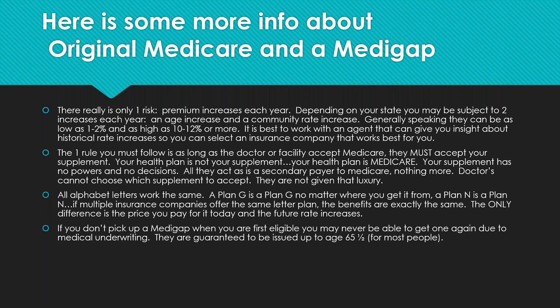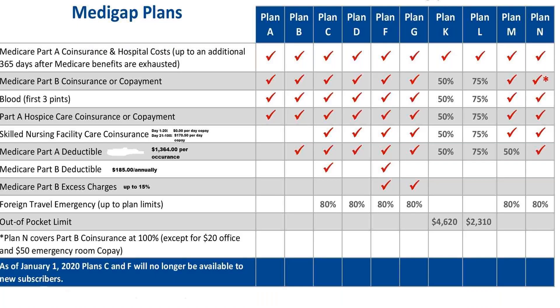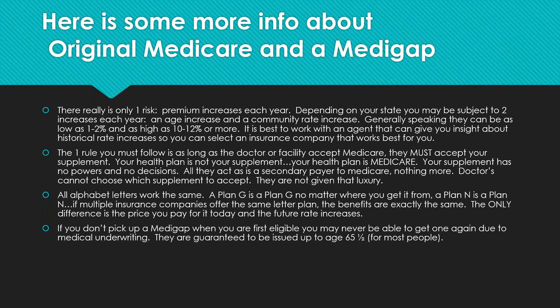All alphabet letter plans work the same — a Plan G is a Plan G regardless of which insurer provides it. A Plan N is a Plan N from any company. The only differences between the same letter plan from two different companies are the price you pay today and the future rate increases. The benefits are identical — every insurance company offering these alphabet-letter plans must provide exactly the same benefits.